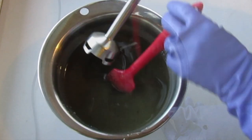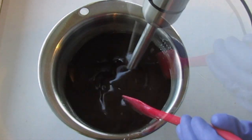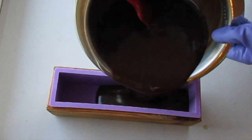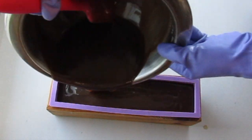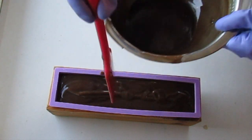Beeswax soap traces fast. The kaolin clay, cocoa powder, and cinnamon bark essential oil also accelerate trace. So while I stopped stick blending at emulsion, by the time I poured it, it was already at medium trace. This is helpful because I wanted this batch to harden quickly for cutting it the next day.